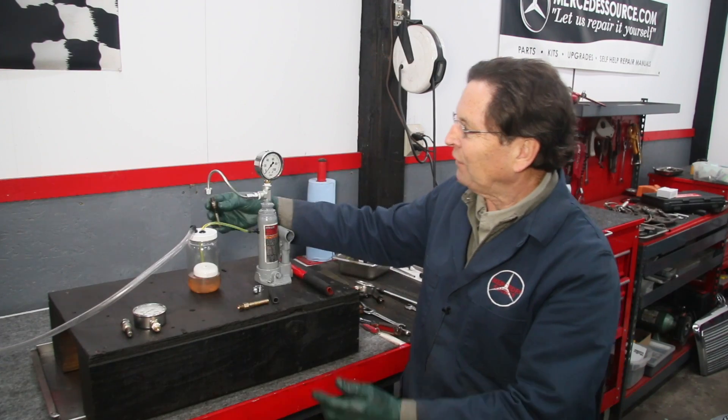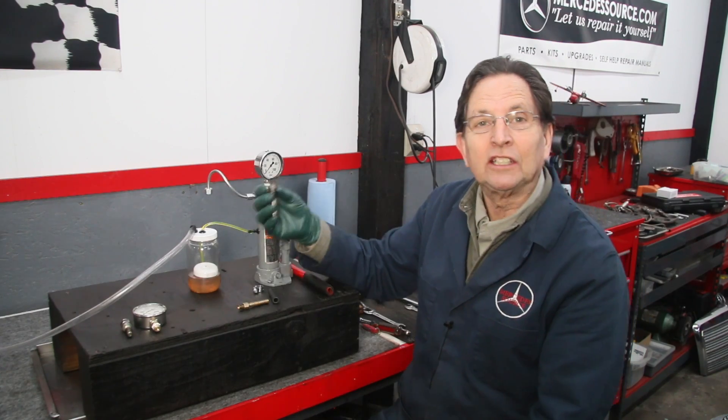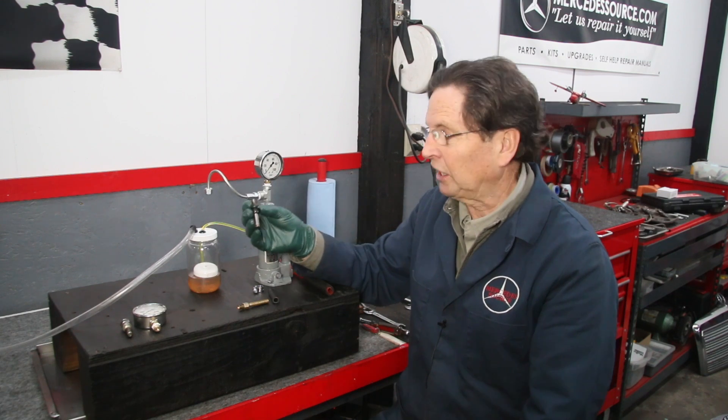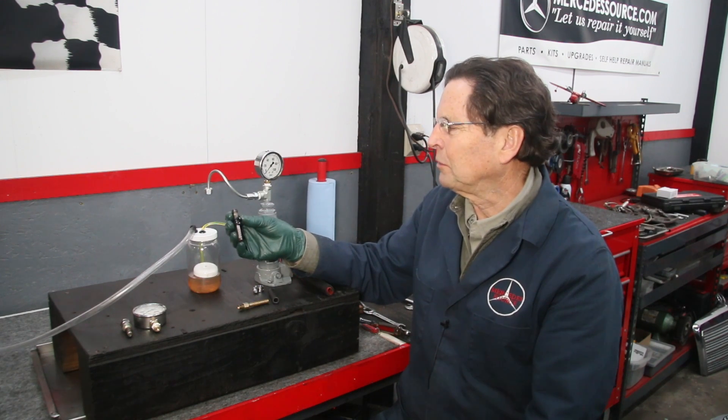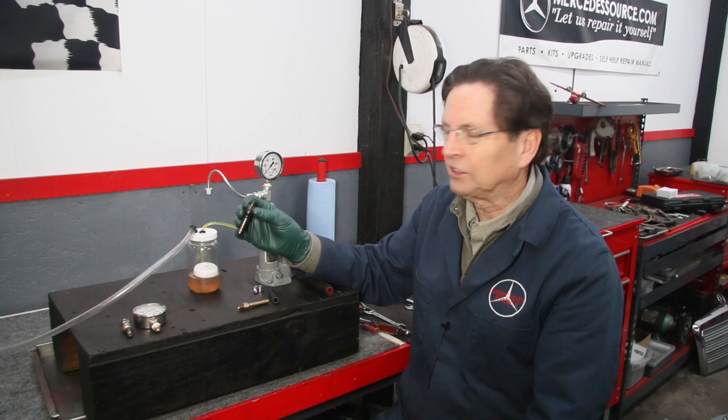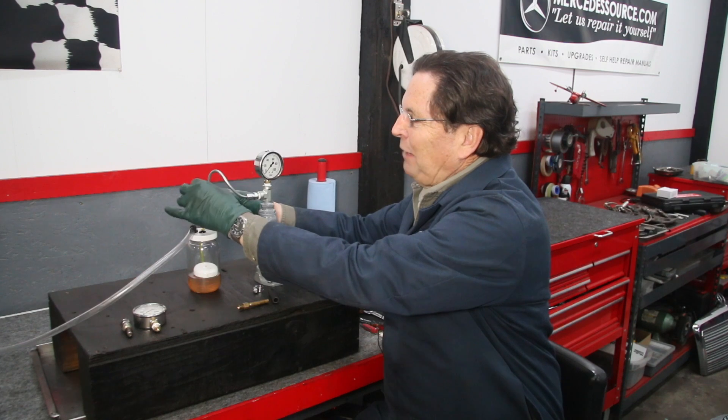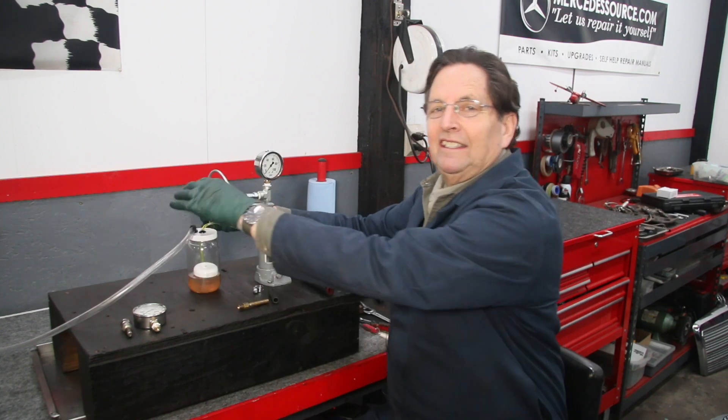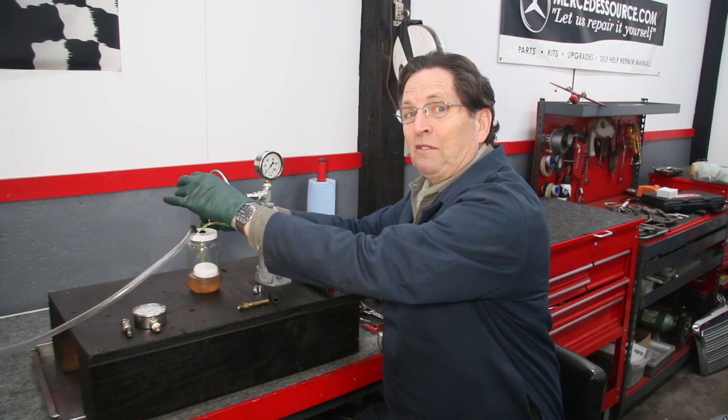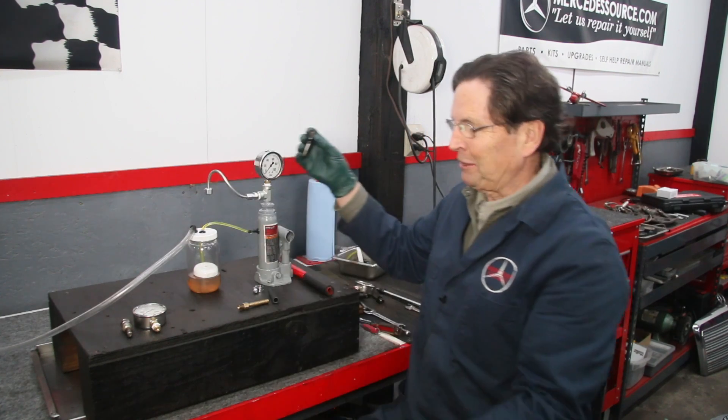Now, one of the interesting things I found is the threads on this early CIS injector, which was produced from the mid 70s up to the mid 80s. It screws right on to the same fitting that we use for the diesel injectors, but you have to make a little modification. And I explained that in my instructions.